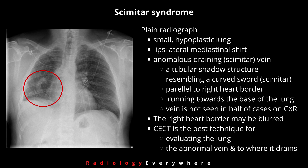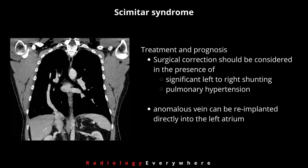This vein is not seen in half of cases on chest X-ray. You may also see a blurred right heart border. Contrast CT chest is the best technique for evaluating the lung and the abnormal vein and where it drains. Regarding treatment and prognosis, surgical correction should be considered if there is significant left-to-right shunting and pulmonary hypertension. The anomalous vein can be re-implanted directly into the left atrium.